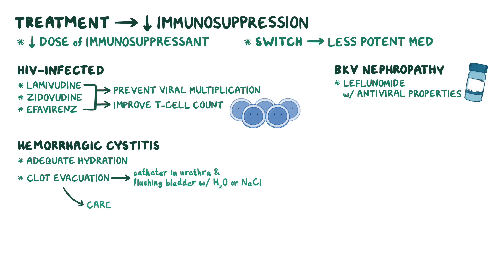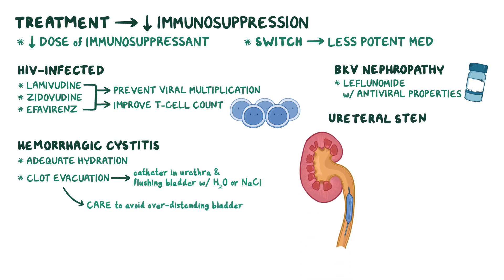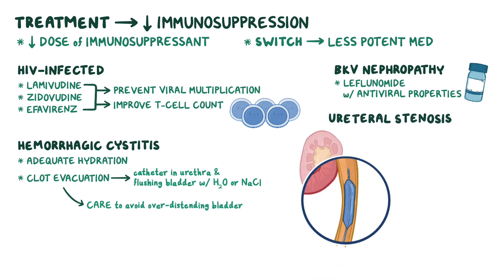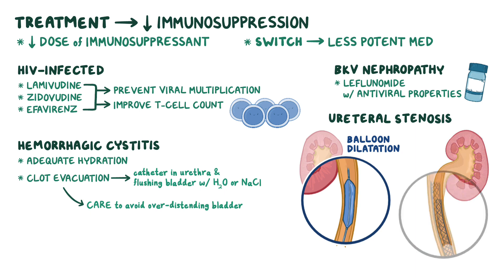Care must be taken to avoid over distending the bladder. Ureteral stenosis can be treated with balloon dilatation where a deflated balloon is inserted into the stenosis, then it's inflated to open up the ureter, or by placing a stent.